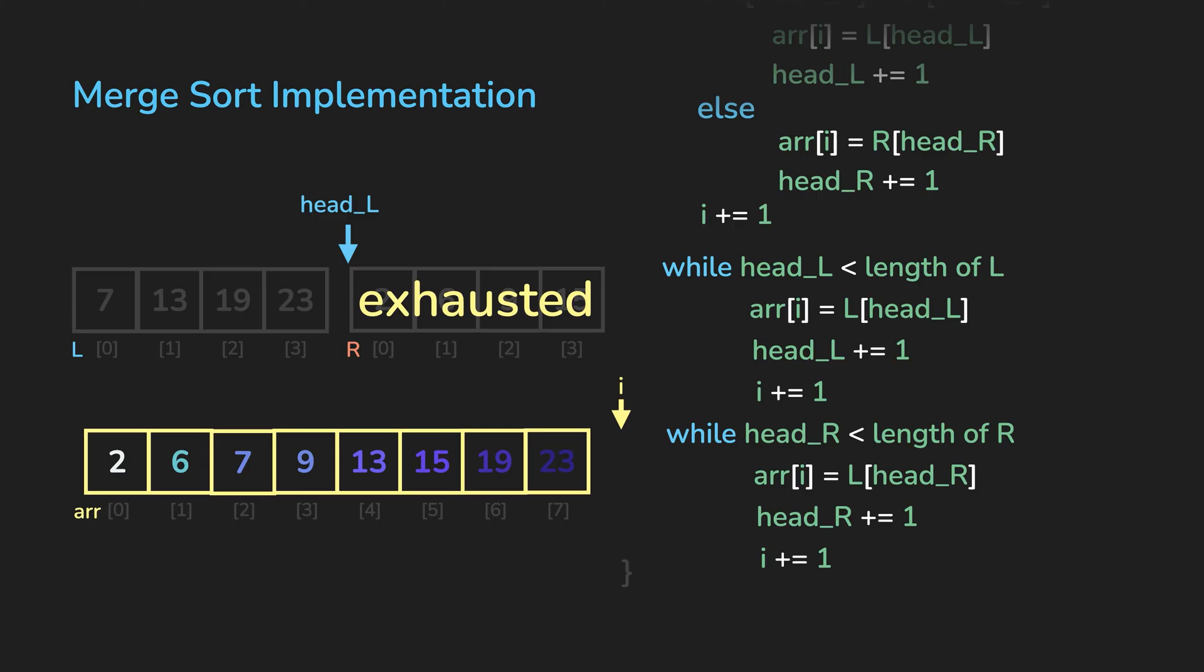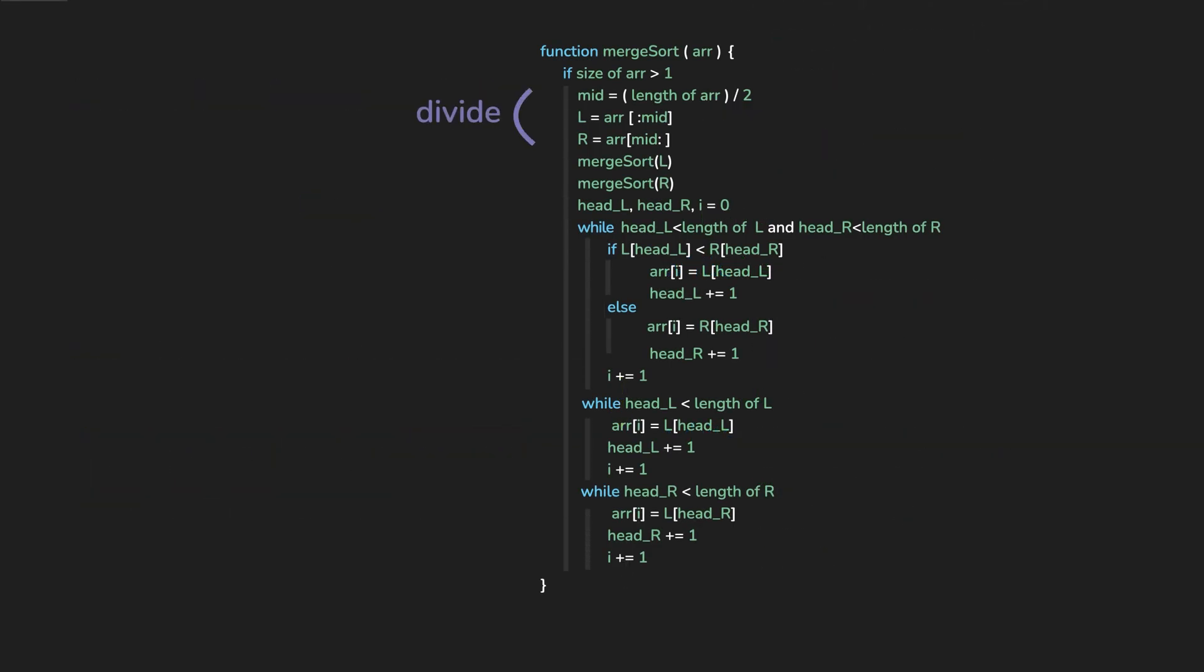So that's about it. What we did was we divided the array and made two copies, sorted each sub-array by recursion. And in the while loop, we did the comparison and we overwrote our original array with the smaller of the two.